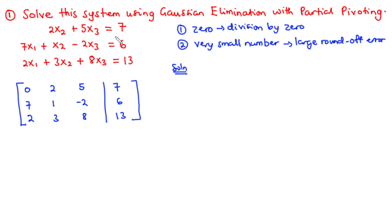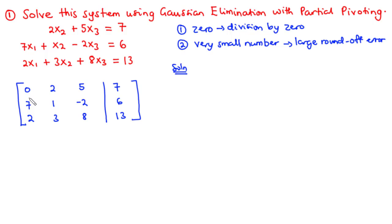After representing the system in augmented form, just like naive Gaussian elimination, we are going to do forward elimination and back substitution. The only difference is that because we are using Gaussian elimination with partial pivoting, for each forward elimination step we are going to do partial pivoting first. We have three equations, so we perform n minus one equals two forward elimination steps. The first step makes two values go to zero, and the second step makes one more go to zero, giving us an upper triangular matrix.